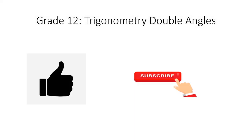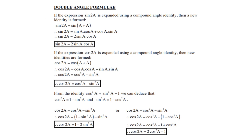Welcome to Mathematics with AMS, Grade 12 Trigonometry — Double Angles. Don't forget to give me a huge like and to subscribe. Let's look at the double angle formulae. If the expression sine of 2a is expanded using a compound angle identity, then a new identity is formed.